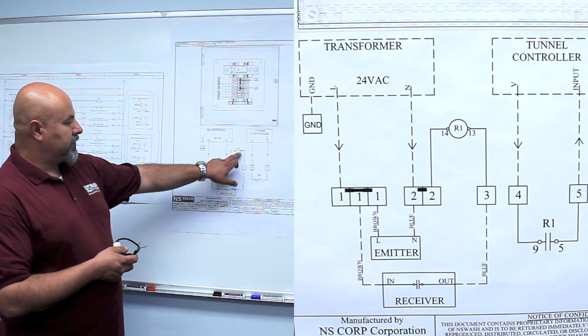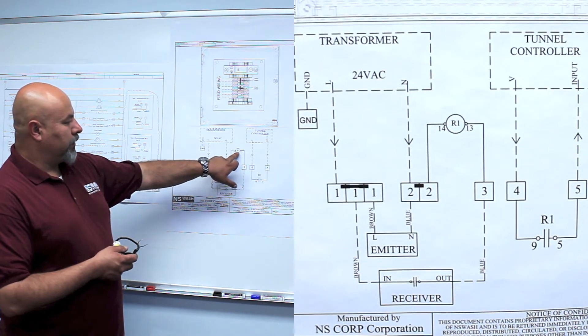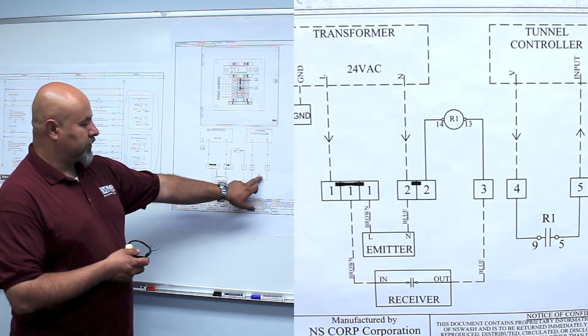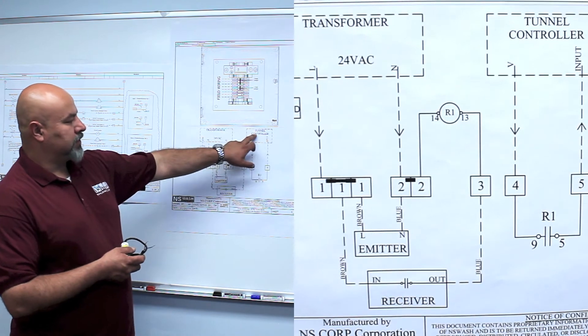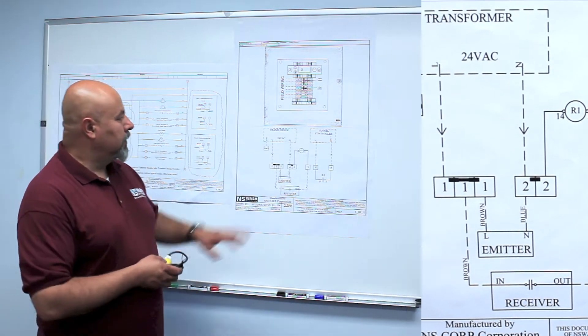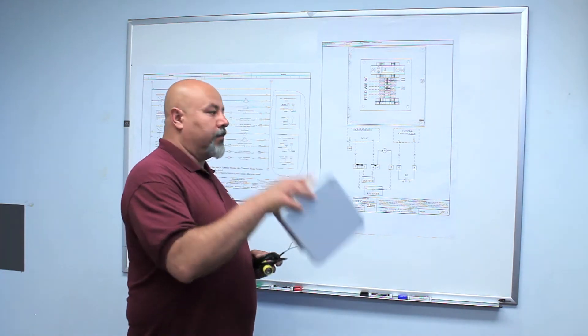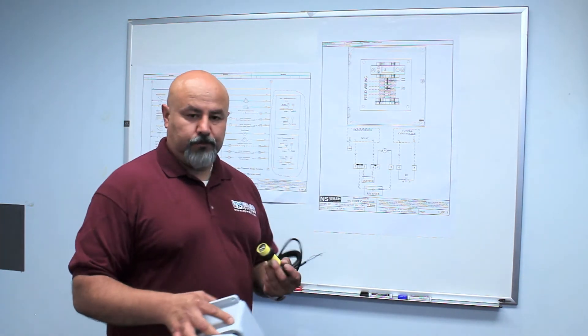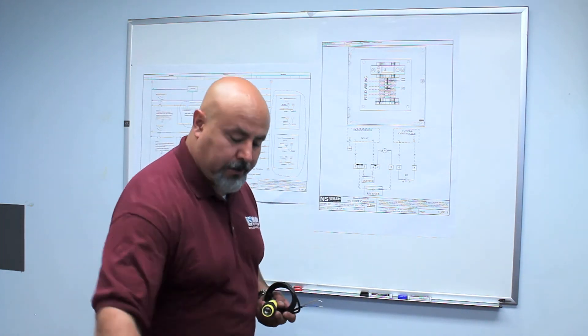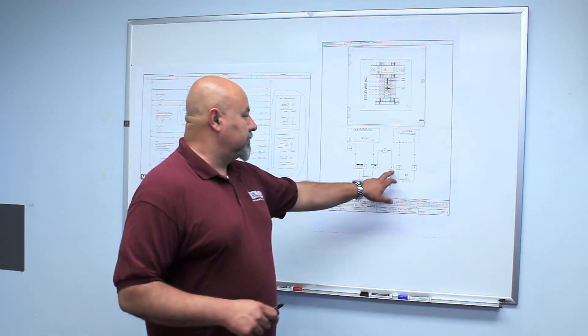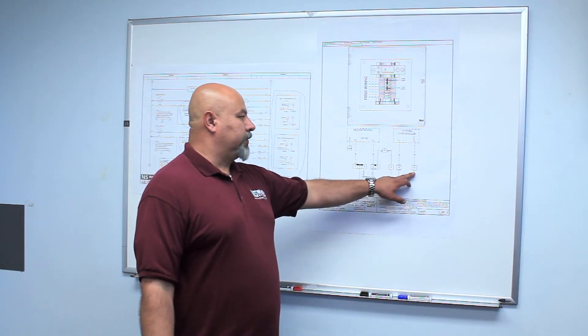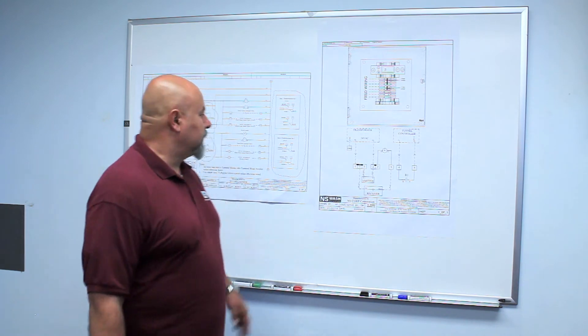Now, terminal number three is the opposite side of the coil on the relay R1, which is going to close the center contacts and send a signal to your tunnel controller. So this is a very simple little box, and as you can see, it's a very small box. Put it on the wall, bring your 24 volt AC to it, and your output signal to your controller out.